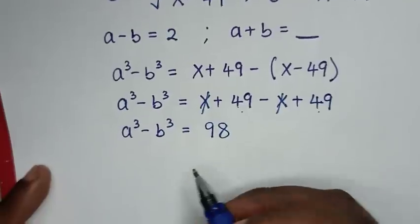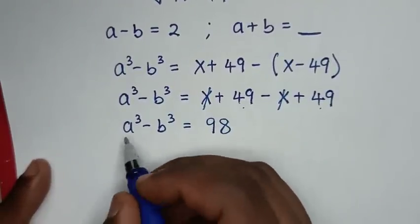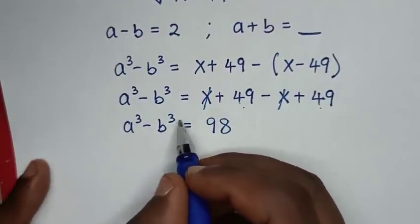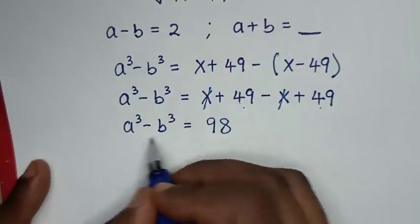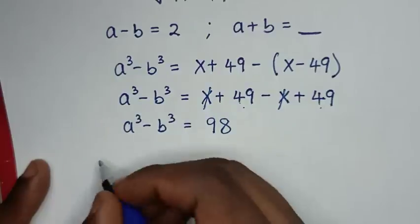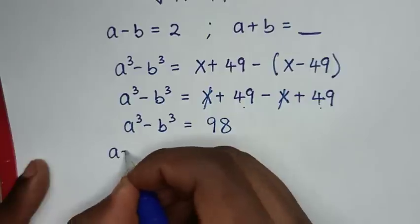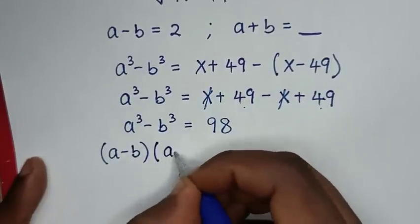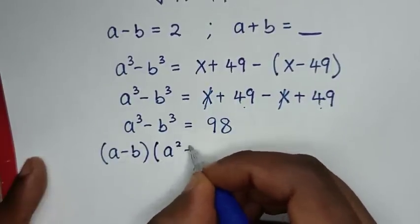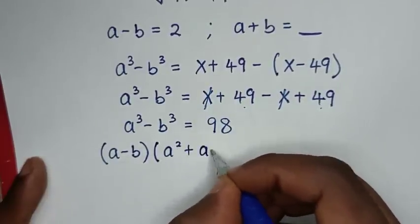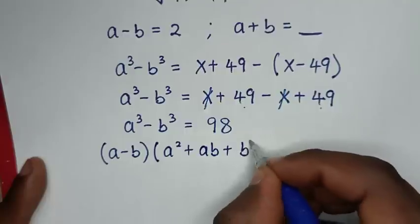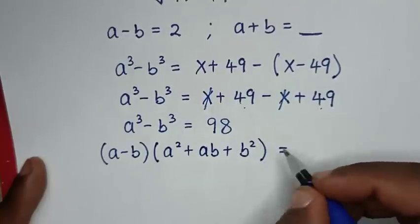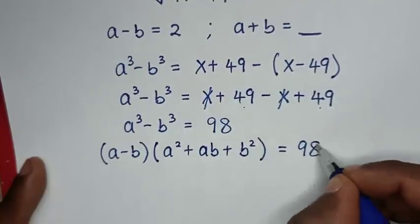From the algebraic rule, a cubed minus b cubed is the perfect cube formula, which equals (a minus b) times (a squared plus ab plus b squared), and this equals 98.